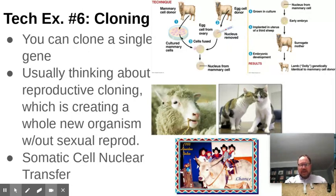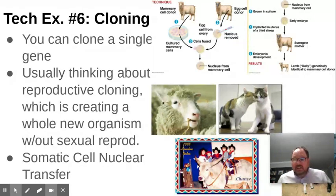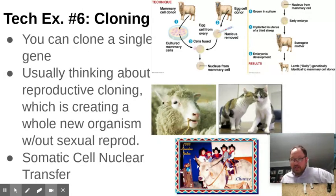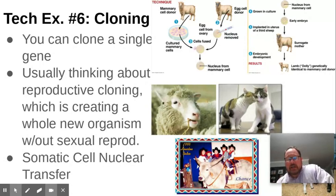This leads to some interesting issues. Somatic cells have DNA that's already been copied, and we know that when you copy DNA the telomeres are shortened. So if you take a nucleus from a somatic cell, it's already going to have chromosomes that have been shortened. One effect of cloned organisms is that they tend to have shorter lifespans - Dolly didn't live as long as a normal sheep because her DNA already had shortened telomeres.